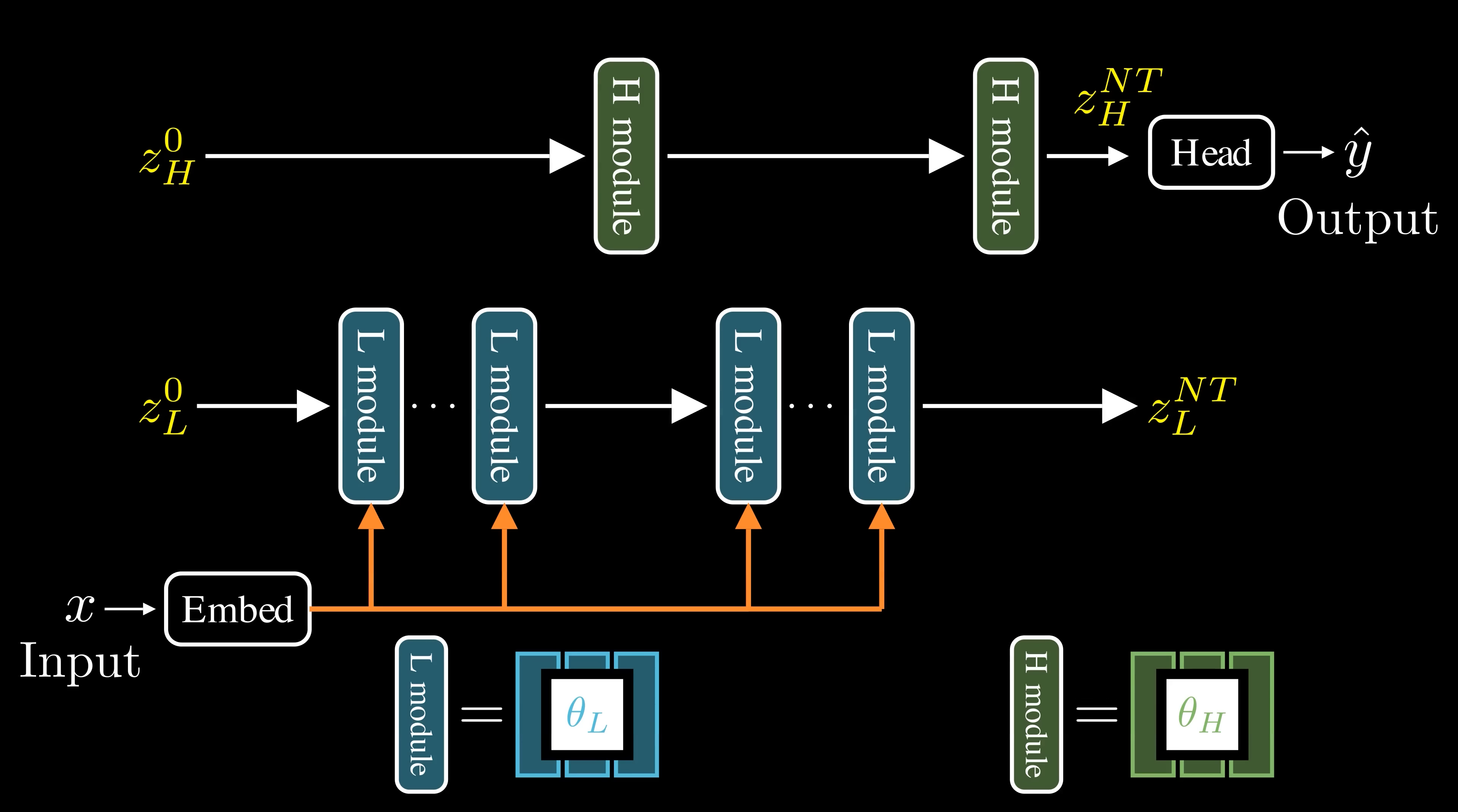The two recurrent models are coupled. During each low-level iteration, the hidden state of the high-level module, denoted as ZH, is used as a conditioning input when updating the hidden state of the lower module.